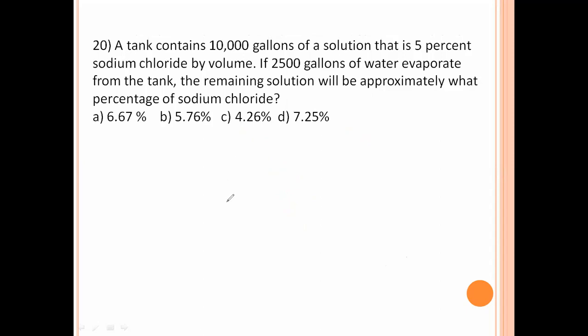A tank contains 10,000 gallons of a solution that is 5% sodium chloride by volume. If 2500 gallons of water evaporate from the tank, the remaining solution will be approximately what percentage of sodium chloride. In 10,000 gallons of solution we have 5% sodium. Here 2500 water evaporated. So remaining solution is 7500. Here water is evaporated. This one decreases, this one increases means it is indirect proportion. In indirect proportion rule is 1st product equal to 2nd product.